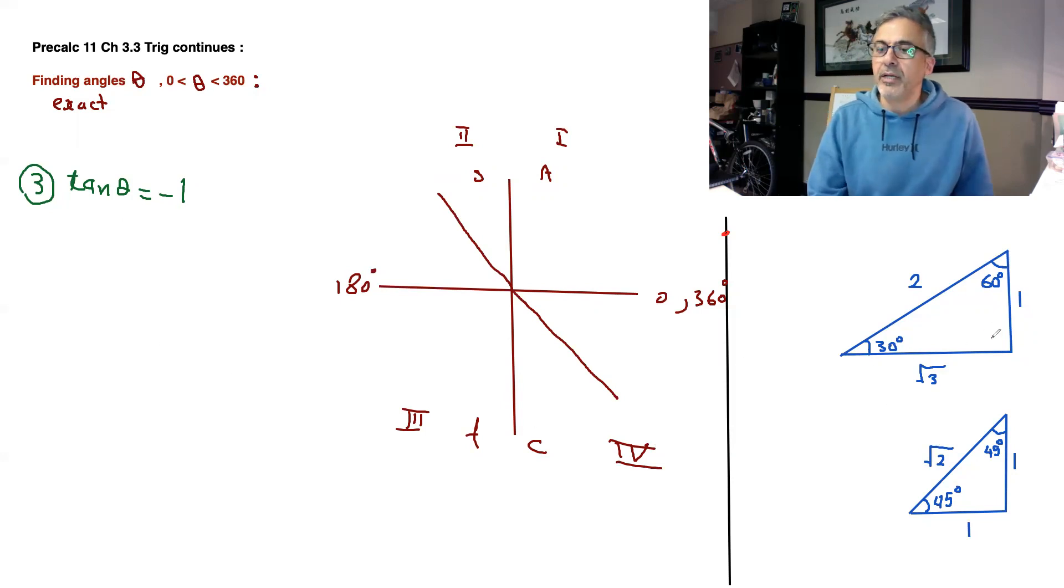Now, if you look at the 30 and the 60 degrees, you're not going to get that out of there. But if you look at 45, tan is opposite over adjacent, and that gives you 1. So I know my reference angle here, my reference angle is 45. I put a 45.